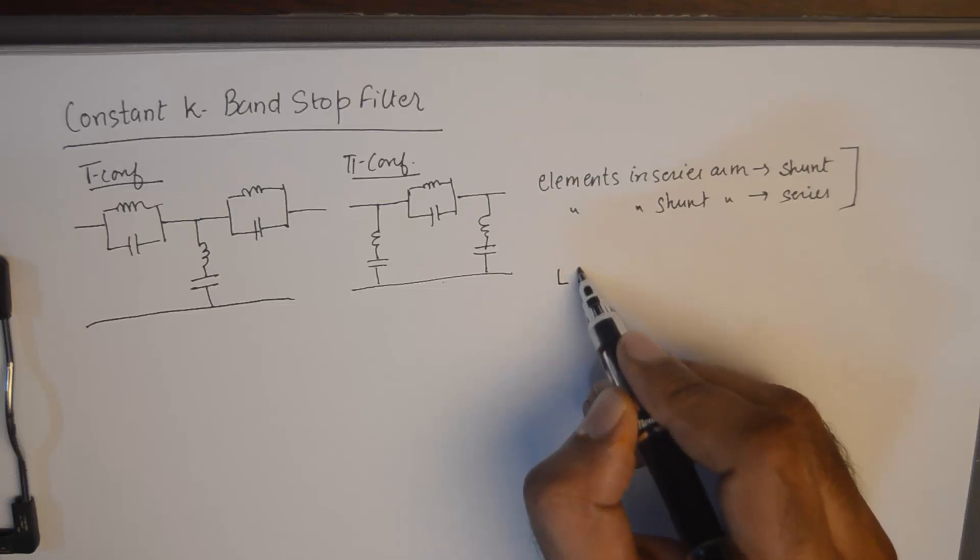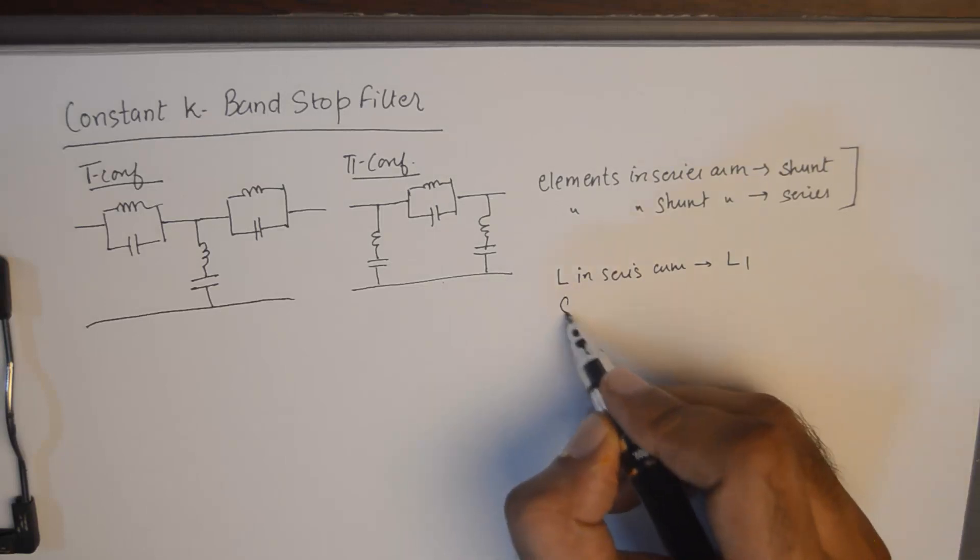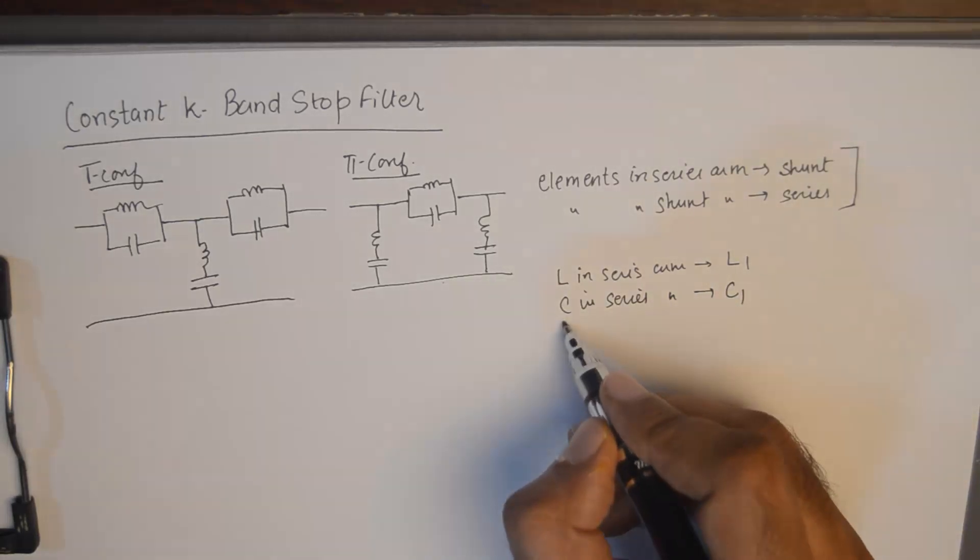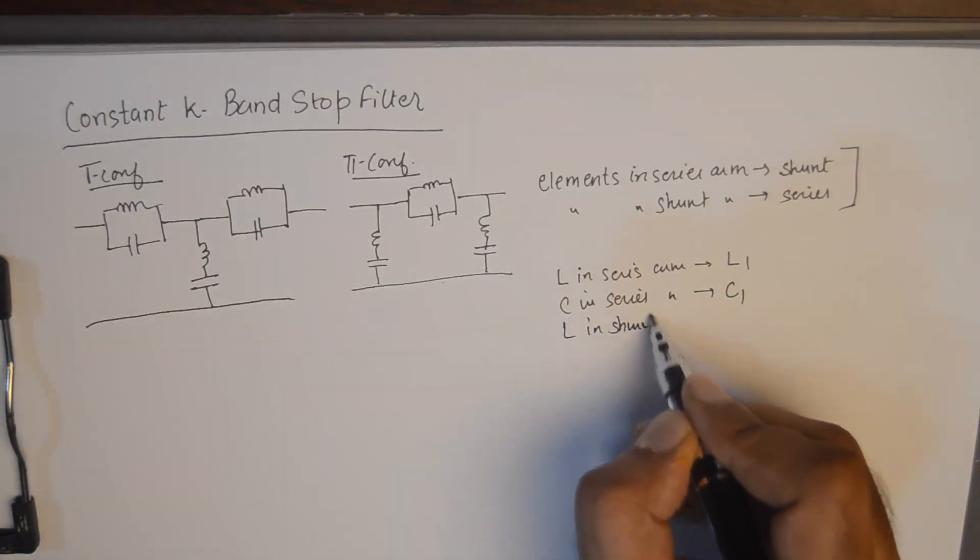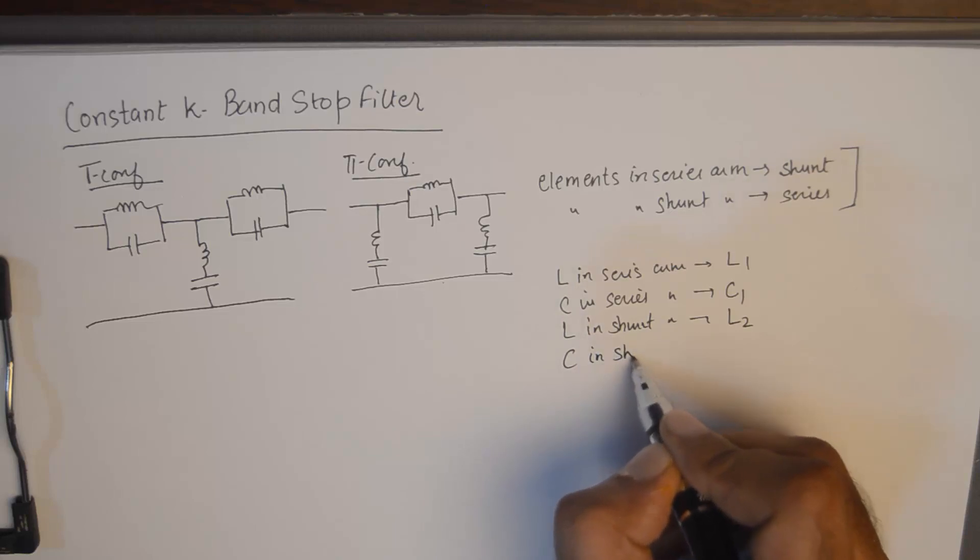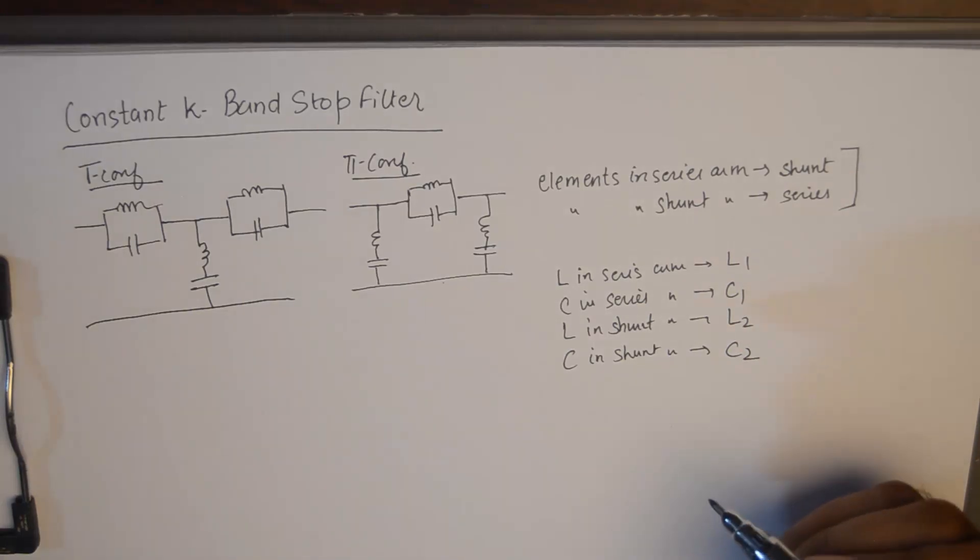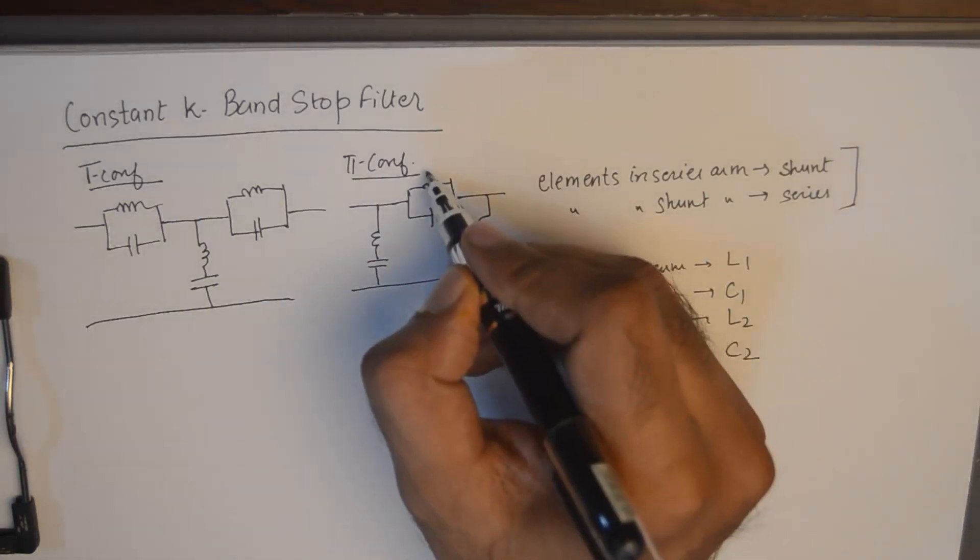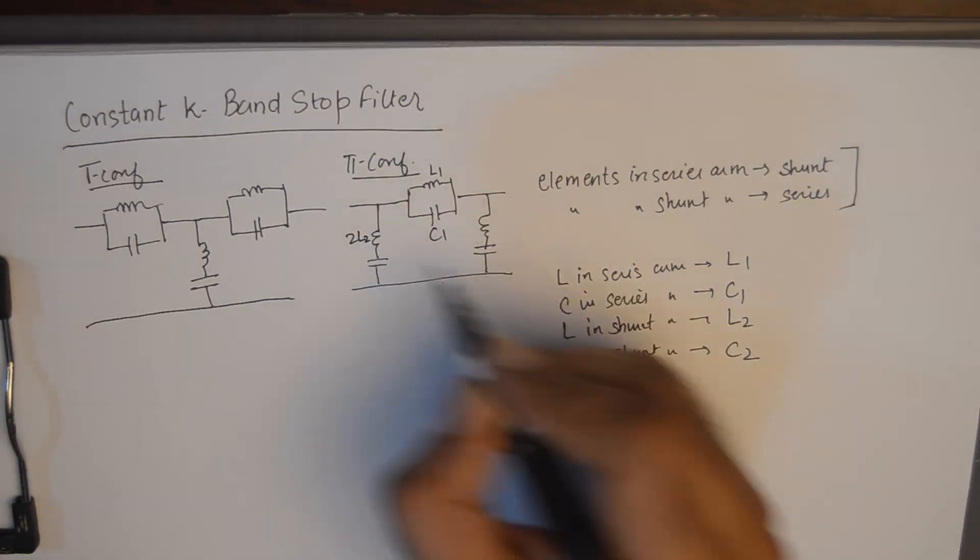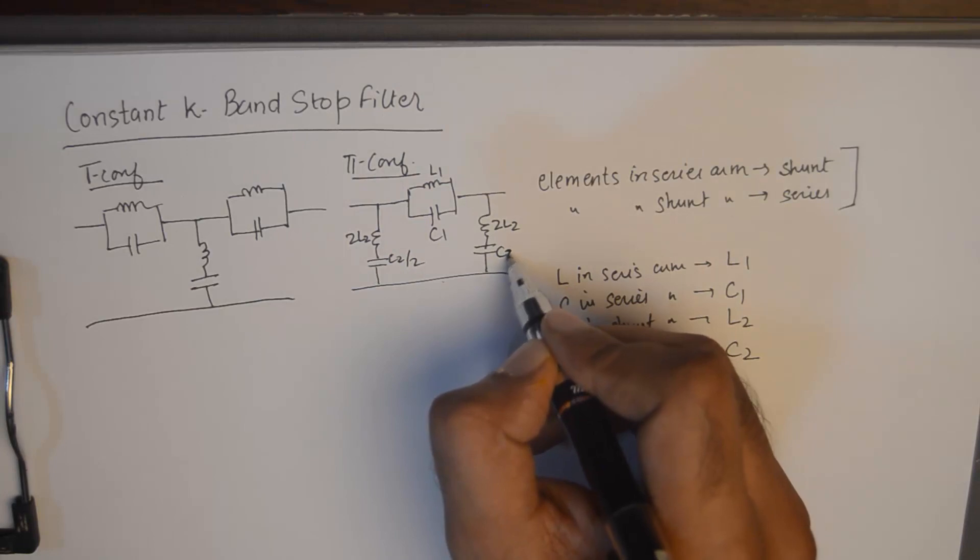Then total inductance in series arm needs to be L1 and capacitor in series arm needs to be C1. And that can be achieved if we put L1 here, C1 here, twice of L2 here, twice of L2 here, L2 here, half of C2 here, and half of C2 here.